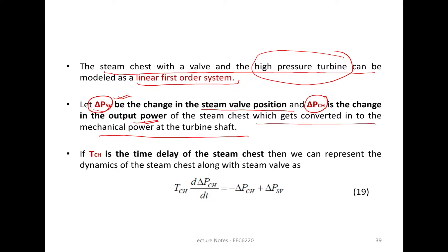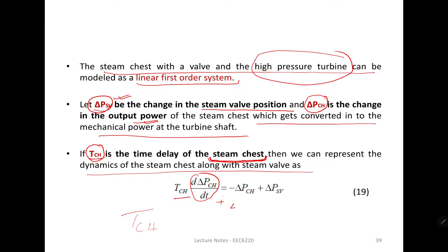If TCH is the time delay of the steam chest — the delay from the steam chest to the turbine — then we can represent the dynamics of the steam chest along with the steam valve as: TCH times d(delta PCH)/dt plus delta PCH equals delta PSV. This is the simple dynamic equation relating valve position to chest output power.